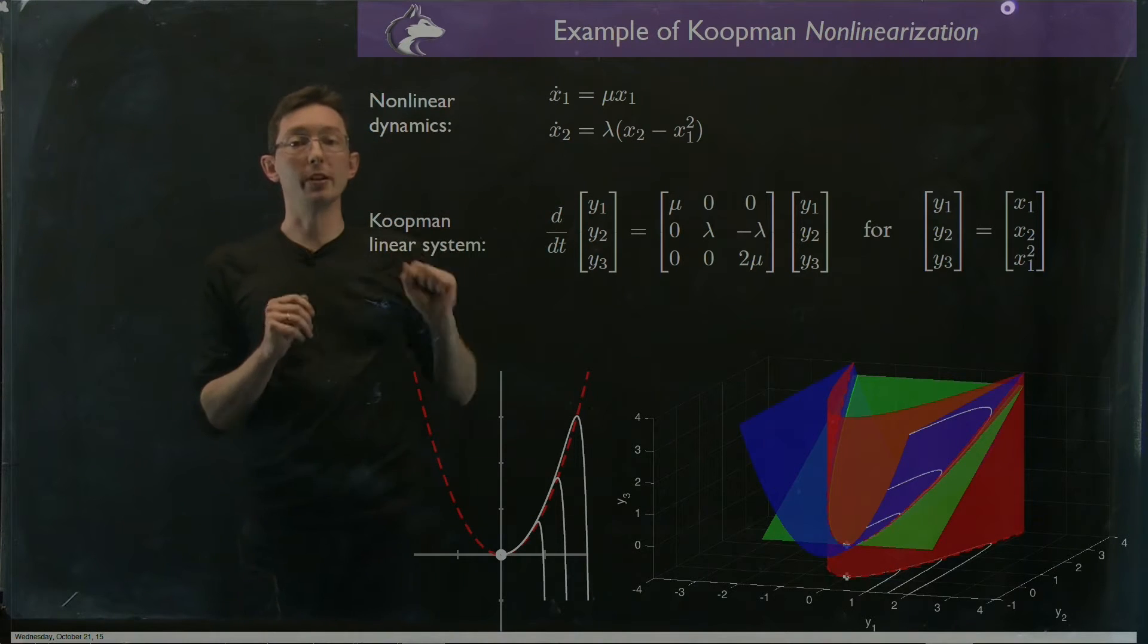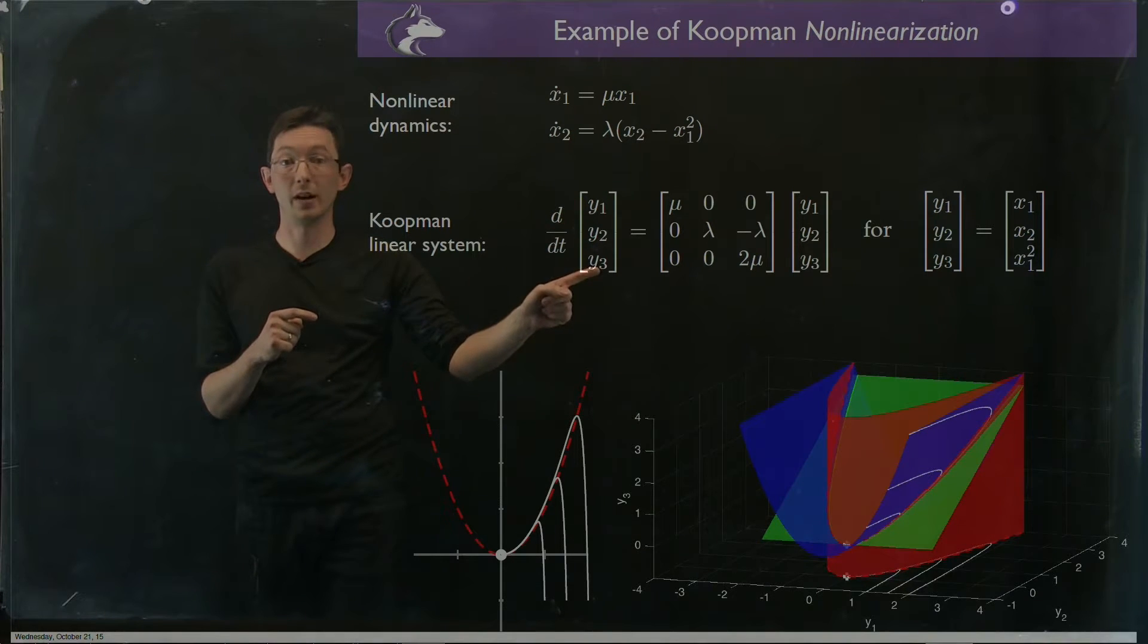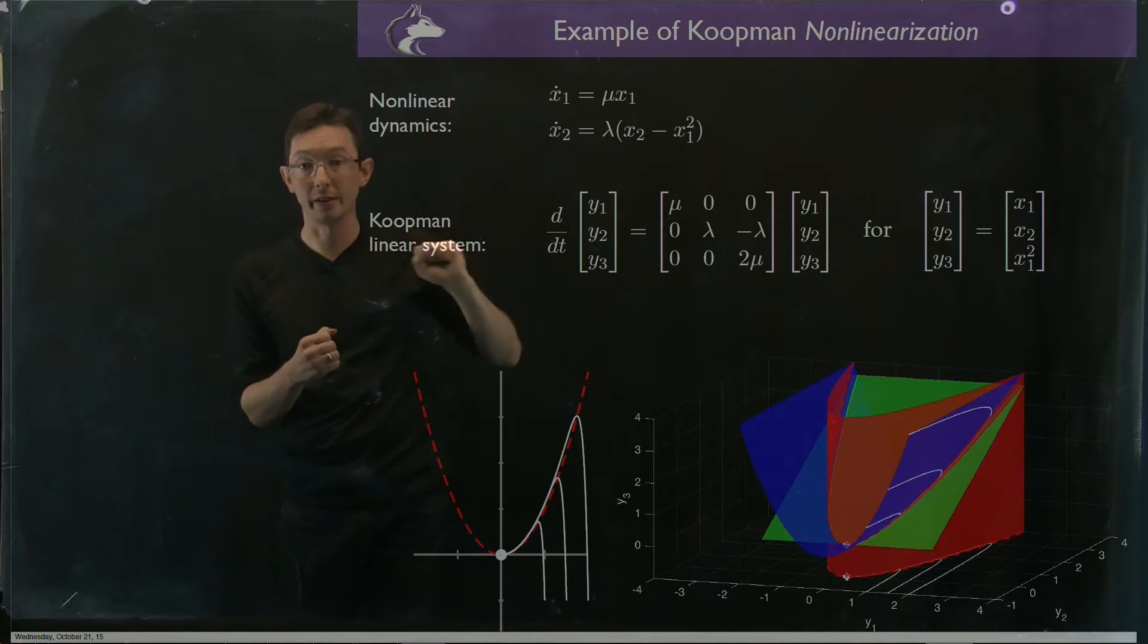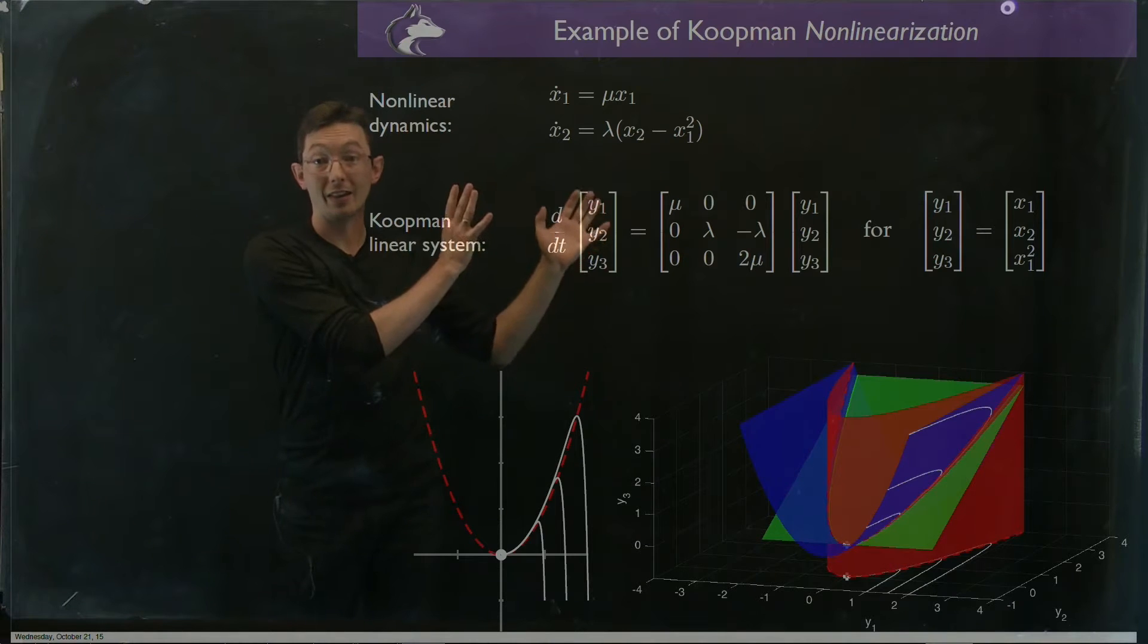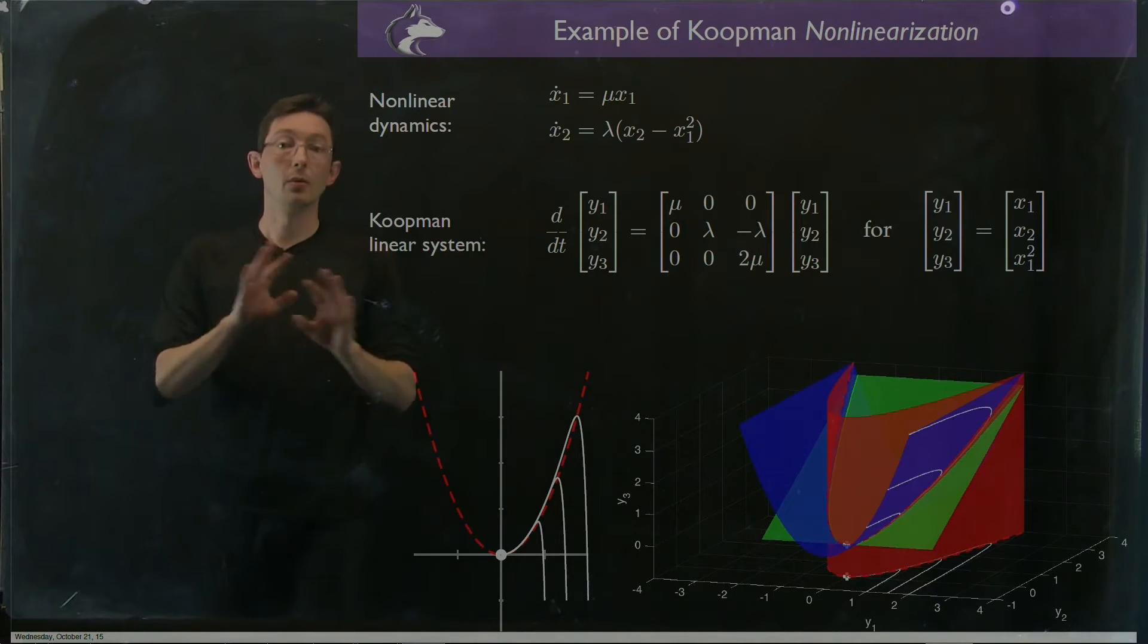So in the Koopman world I can create a new state space where I'm measuring x1, x2, and x1 squared. These are my new variables, three of them. And I can represent my original nonlinear differential equation in terms of a linear dynamical system on these three observable functions, which is awesome.